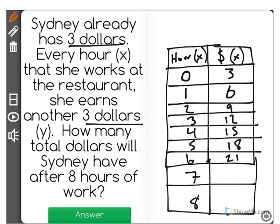And we're just adding 3 each time for the other hour that she worked. So after 8 hours, she would have $27.